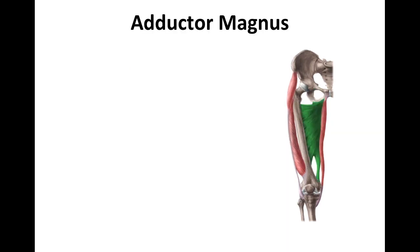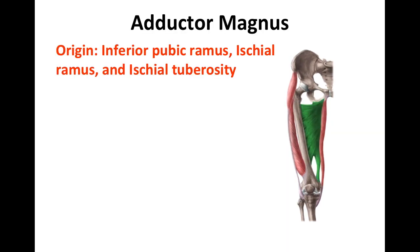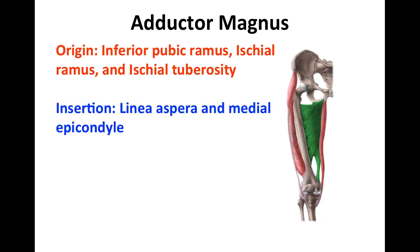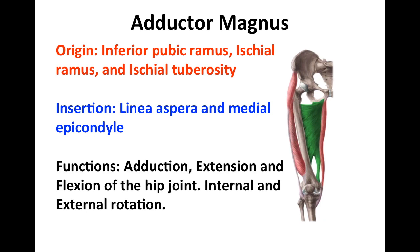The next muscle we're going to talk about is the adductor magnus. Its point of origin is the inferior pubic ramus, ischial ramus, and ischial tuberosity. It inserts in the linea aspera and medial epicondyle. Its function is adduction, extension, and flexion of the hip joint, and it can also internally and externally rotate the hip.